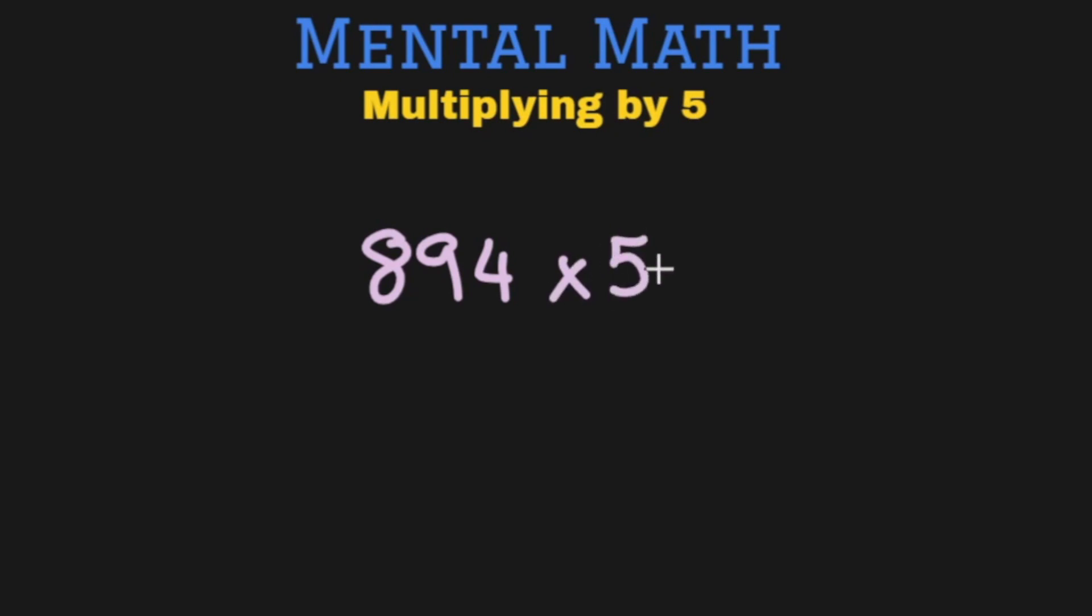894 multiply by 5. Pause the video and try to do it in less than 2 seconds. Have you arrived at your answer? I'm sure all of you must have just done it in less than 2 seconds. So what's the answer? Just divide by 2. Very simple. 447. And multiply it by 10. So 4470 is our final answer.